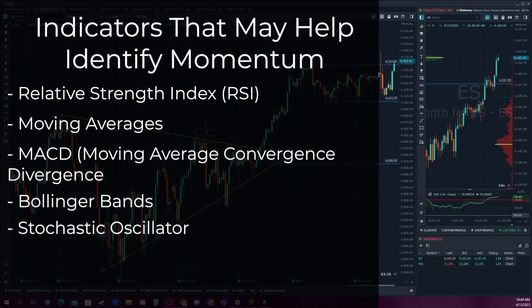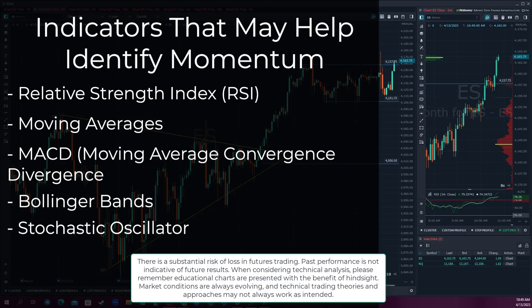Now we will look at a few indicators commonly used to help identify momentum in the market. The Relative Strength Index, also known as RSI, is a momentum oscillator that measures the speed and change of price movements; traders often look for overbought or oversold conditions on the RSI to identify potential entry and exit points. Moving averages are technical indicators that show the average price of an asset over a specified period of time; traders often use moving averages to identify trends and potential trading opportunities. The MACD, or Moving Average Convergence Divergence, is a popular momentum indicator that shows the relationship between two moving averages; traders often look for bullish or bearish crossovers on the MACD to identify potential entry and exit points.